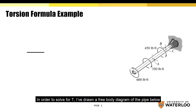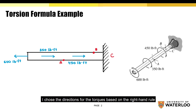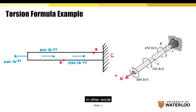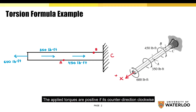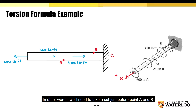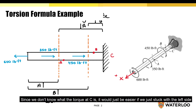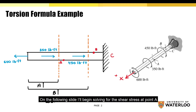In order to solve for T, I've drawn a free body diagram of the pipe. While drawing the free body diagram, I chose the directions for the torques based on the right-hand rule, where my thumb is pointing away from the surface of the cross-section. The applied torques are positive if in the counterclockwise direction and negative if in the clockwise direction. We'll need to apply the method of sections at the point of interest to solve for T — taking a cut just before A and B. When we apply the cut, we have the option to solve for either the left or right side. Since we don't know what the torque at C is, it would be easier to stick with the left side.